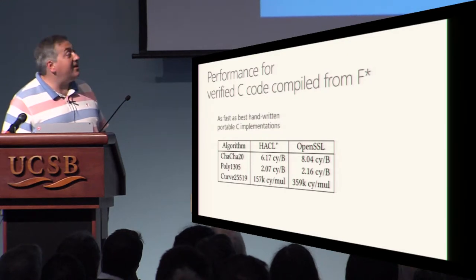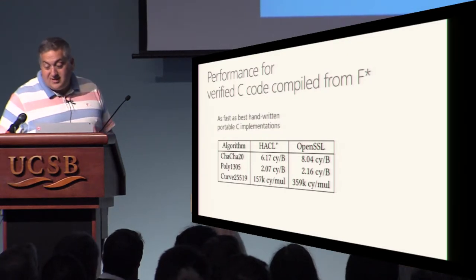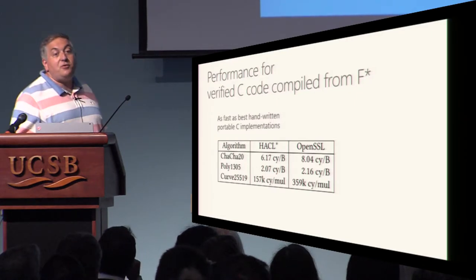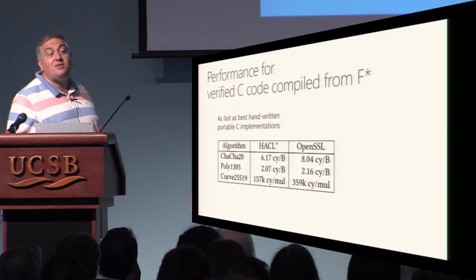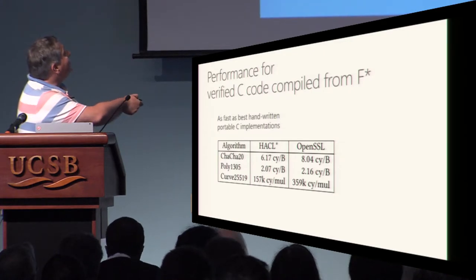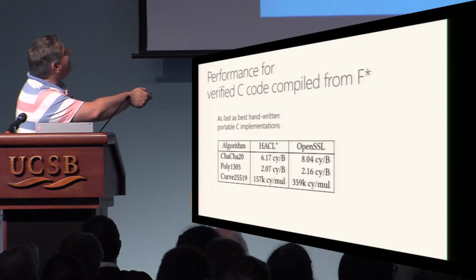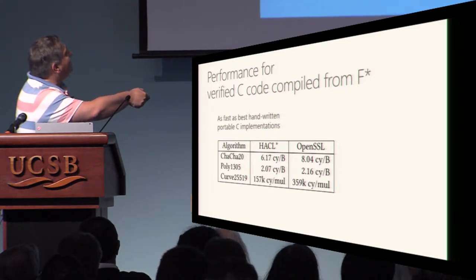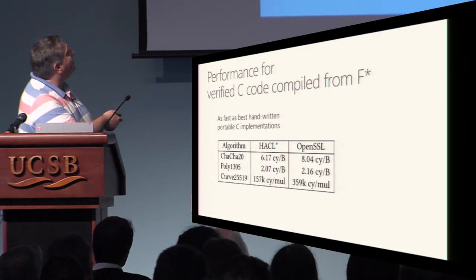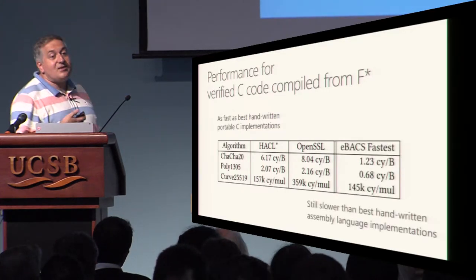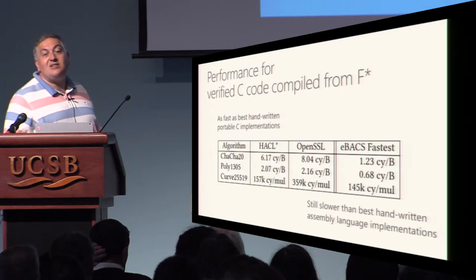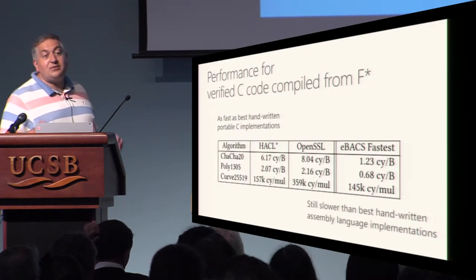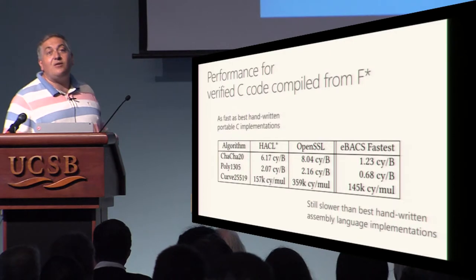Is it correct, but is it fast enough? After quite a lot of work optimizing both the compiler and the source code, we can match or even exceed the performance of the best hand-written implementation coded in C. The numbers are given in cycles per byte. We are slightly better and even much better than OpenSSL for portable C implementations, notably for Curve25519. We are not as fast as assembly yet — if you are willing to use platform-specific instructions, we can't compete by writing code from F* compiled to C.